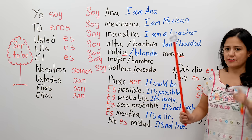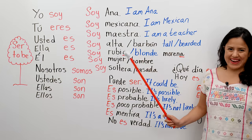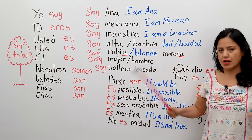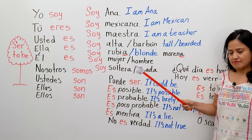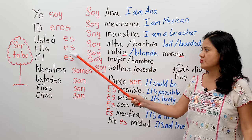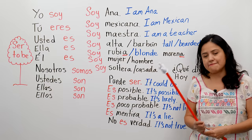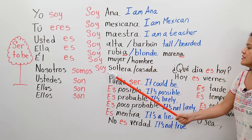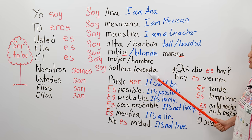Soy mujer — I am a woman. This is interesting: you say 'I am a woman,' but in Spanish you're not going to say 'soy una mujer.' You're just going to say 'soy mujer,' or 'soy hombre.' Soy soltera — I am single. But if you are married, you could say 'soy casada.' If you're a man, 'soy soltero' — I am single — or 'soy casado' — I am married.